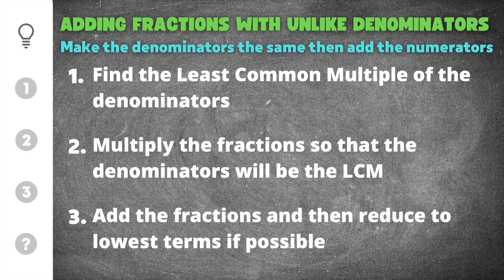There are three important things that we need to remember when adding fractions with different denominators. The first thing is that we need to find the least common multiple of the denominators. The least common multiple means we're looking for the smallest number that goes into both denominators.